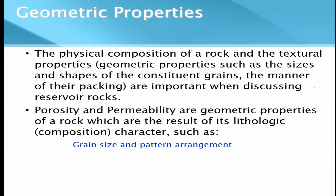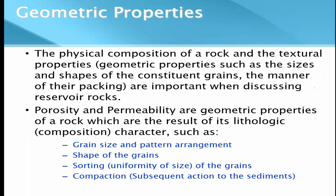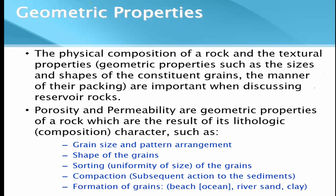Geometric properties refer to grain size, the pattern or arrangement of grains, the shape of grains, their sorting — whether they are uniformly sorted or not — and their packing. All these properties can be inferred through rock physics, including information about the sedimentary environment in which the grains were deposited, so these things can also be physically interpreted.